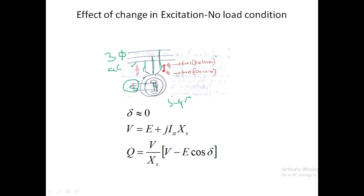What about reactive power? Reactive power may be delivered or absorbed — it can deliver to the infinite bus bar or absorb from it. In case of a motor, absorbing is positive and delivering is negative. Under no-load condition, delta can be approximately taken as 0. The equation for Q is V by X into (V minus E cos delta). In case of a generator the equation is E cos delta minus V, but in case of a motor it is V minus E cos delta.